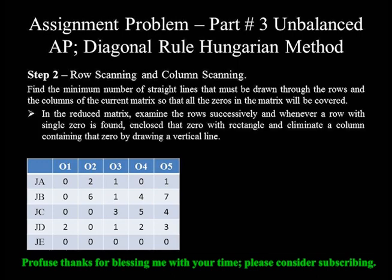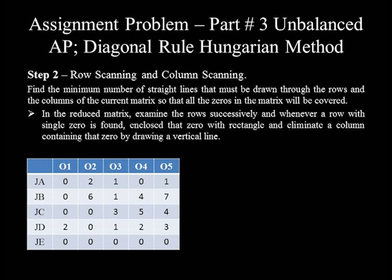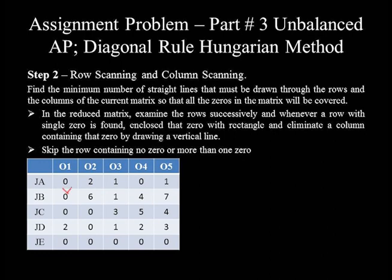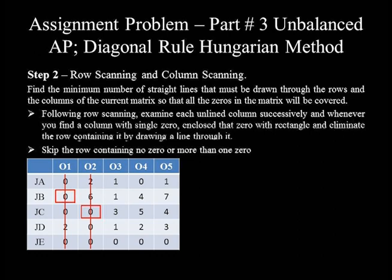In the row scanning step, examine the rows of the matrix successively, and whenever a row with a single zero is found, enclose that zero with a rectangle, and eliminate the column containing that zero by drawing a vertical line through it. Skip rows containing no zero or more than one zero. We skip row 1 because it contains more than one zero. Row 2 contains only one zero under column 1, so we enclose it in a rectangle and eliminate column 1. The only unlined zero in row 3 is under column 2, so we enclose it and delete column 2. Row 4 has no active zero and row 5 has three zeros, so we skip them and continue to column scanning.